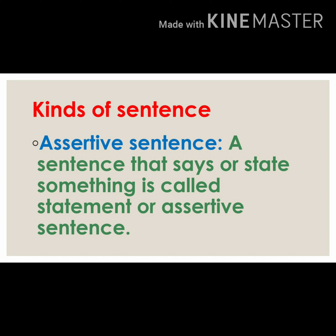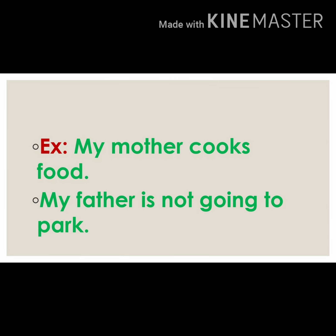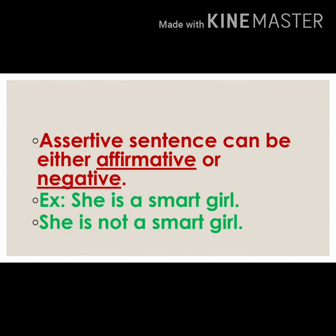A sentence that says or states something is called a statement or assertive sentence. You can say declarative also. Now let's take some examples. 'My mother cooks food.' We state something about my mother, so it is an assertive sentence. 'My father is not going to the park.' This is also assertive — a negative assertive sentence. An assertive sentence can be either affirmative or negative.